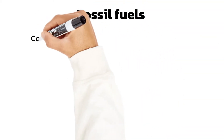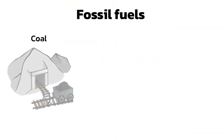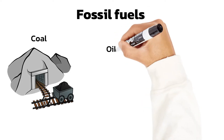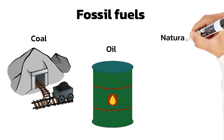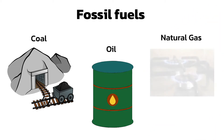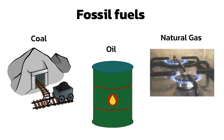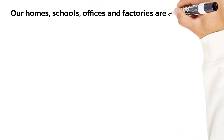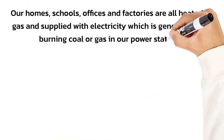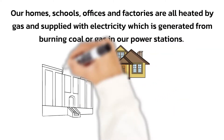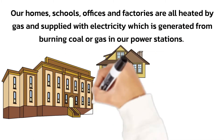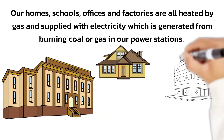The majority of energy we use every day comes from fossil fuels. The term fossil fuel is given to coal, oil and natural gas, because they are formed from the remains of animals and plants from millions of years ago. Our homes, schools, offices and factories are run on gas and by electricity, which is generated by burning coal or gas in a power station.